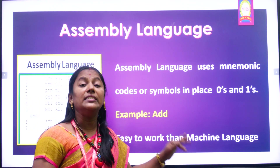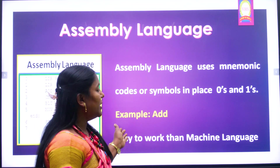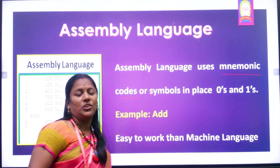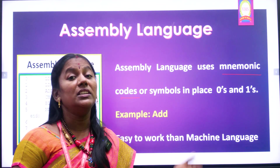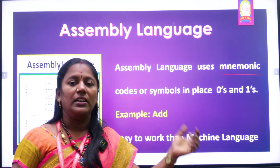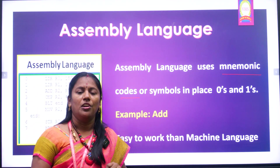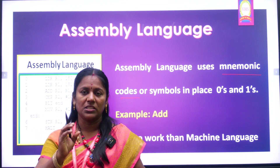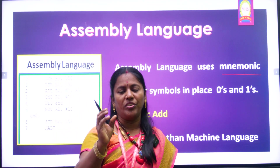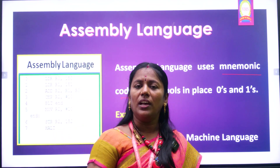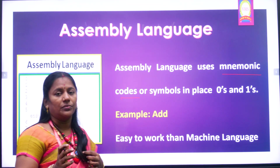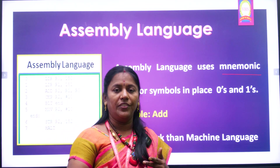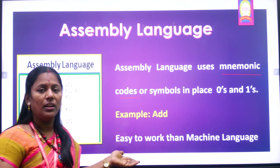After machine language, we have assembly language. Instead of 0s and 1s, assembly language uses mnemonic codes — easy-to-remember names. For example, for addition: ADD; subtraction: SUB; to move: MOV. For each and every task, a code word is used. However, remembering those code words is still difficult for users.